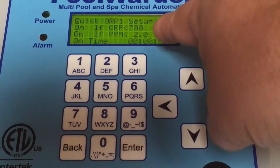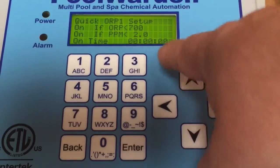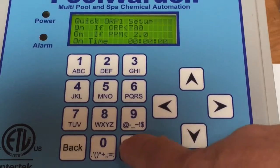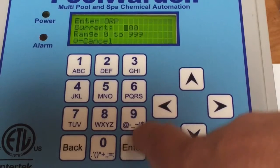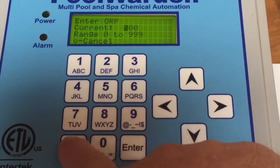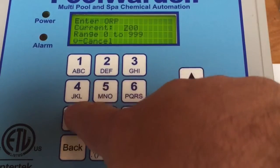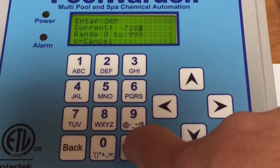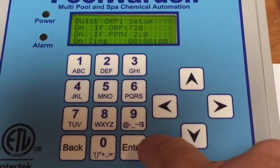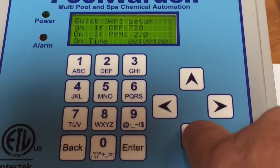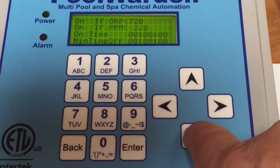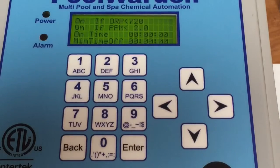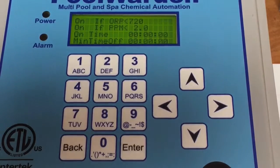You can go here to ORP, push enter, and you can change that to any number you want. Say we want to go to 720, then push enter. It'll also allow us to tweak our on and off times, so you can get real precise on your chemical control, which will help alleviate wasting the chemicals.